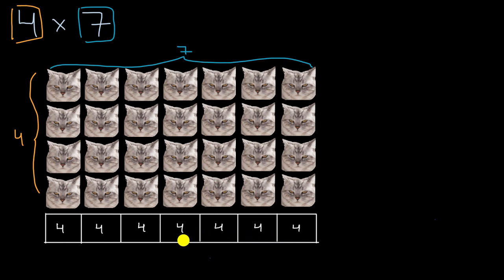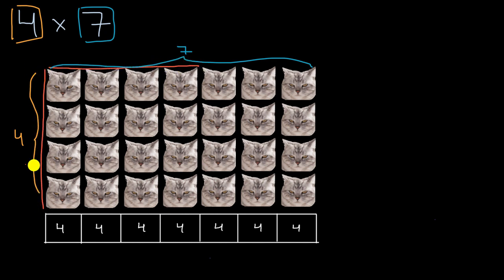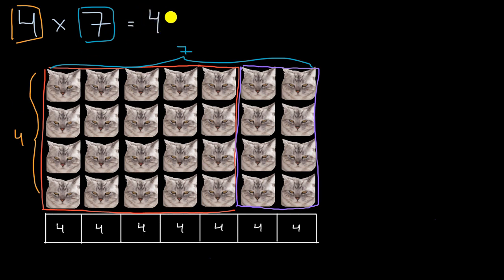What I promised is that we would find ways to break things down to simplify them. What if you didn't know what four times seven is, but you knew what four times five is and what four times two is? Seven is five plus two, so what if we first figured out four rows and five columns, and then figured out four rows and two columns? You can see it's the exact same number of cats.